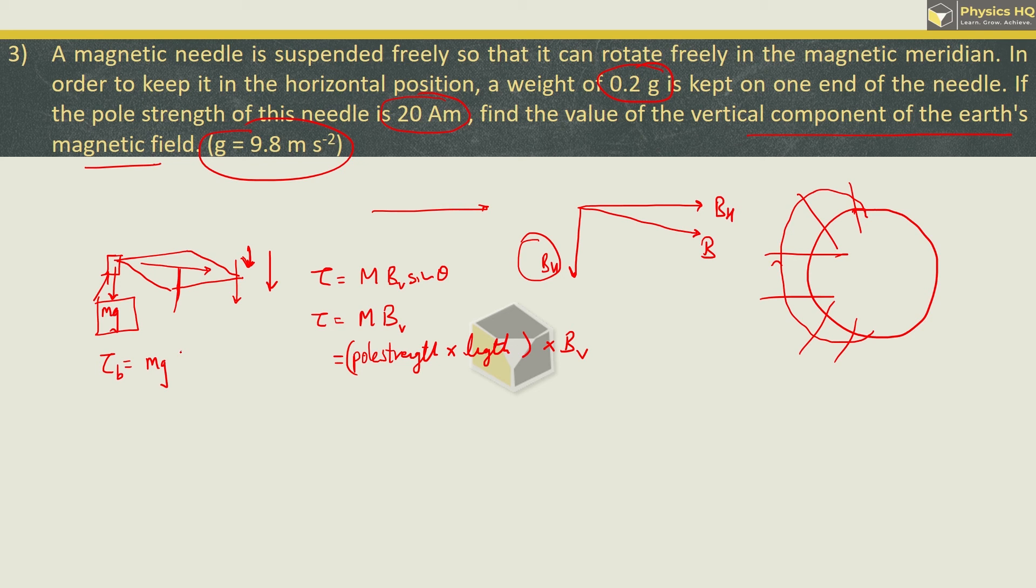Now, the needle is normally suspended from the center so that it is balanced. Because of this Mg, there will be a torque produced here to balance this. So, the balancing torque will be given by the force Mg into the length from the center, which is half.